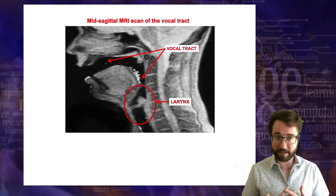We also have flaps in English, though not trills. In a word like 'kitty' as pronounced in American English, you're not fully articulating an unvoiced alveolar stop — you're producing an alveolar flap. Or in a word like 'atom,' there's a flap there too. The IPA flap symbol indicates these sounds.